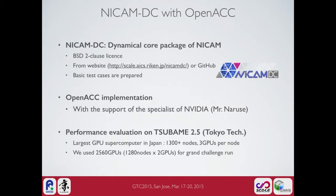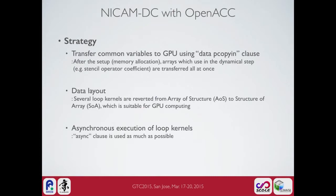TSUBAME 2.5 is the largest GPU supercomputer in Japan. It has over a thousand nodes and three GPUs per node. We used 2,560 GPUs for our grand challenge run. The strategy for implementing OpenACC was to transfer common variables to GPU using data present or copy-in clauses. After setup, arrays used in the dynamical step are transferred all at once.